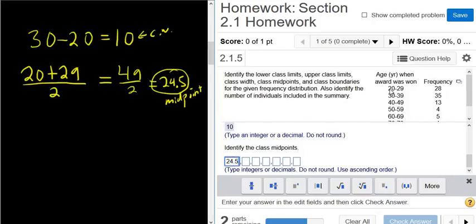So again, to find the midpoint, you just add up the 20 and the 29. I always just add up these numbers and divide by 2. To get the rest of the midpoints, you can do the same thing. You can do 30 plus 39 and then divide by 2. But that's too much work. There's a trick. All you have to do is keep adding the class width. So the class width was 10, so we just add 10. So 34.5, 44.5, 55.5, 65.5, 75.5, and then 85.5. Okay, let's try that.